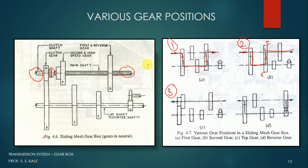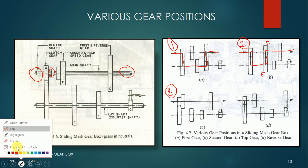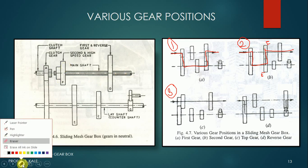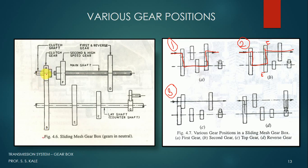Considering the rotation directions: when gear A rotates clockwise, gear B rotates anticlockwise, so the lay shaft rotates anticlockwise. When gear D is engaged for first gear, since the lay shaft gear C is rotating anticlockwise, gear D rotates clockwise. Since gear D rotates clockwise, the main shaft also rotates clockwise — so the output rotates in the same direction as the input.